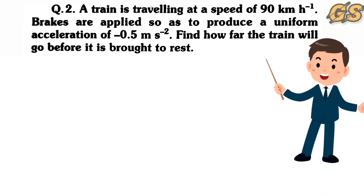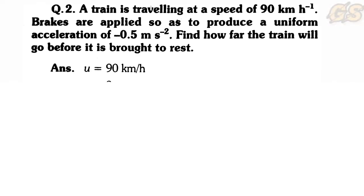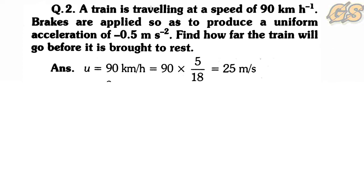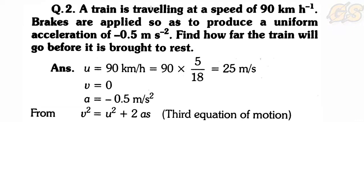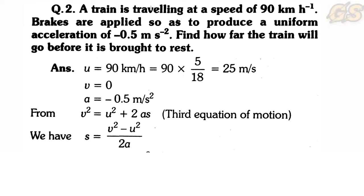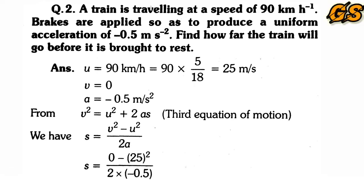We need to find distance s. Convert u = 90 km/h to m/s: 90 × 5/18 = 25 m/s. Final velocity v = 0 since the train comes to rest. Using the third equation: v² = u² + 2as, rearranged as s = (v² − u²) / 2a. Substituting: s = (0 − 625) / (2 × −0.5) = 625 meters.